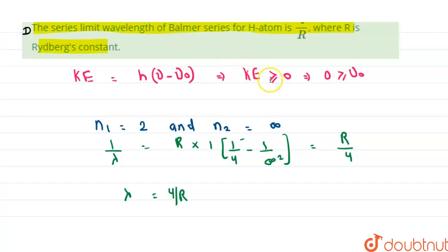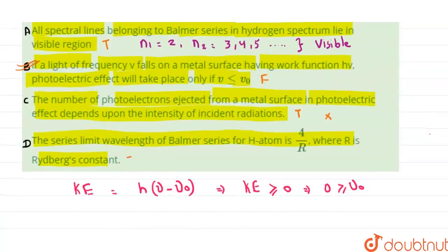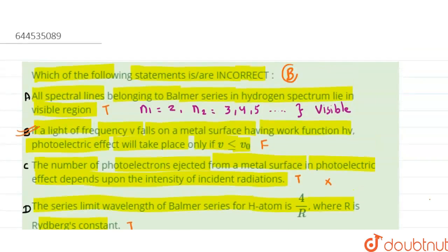limit wavelength for the Balmer series of the hydrogen atom. So statement D is true and is not the required answer. The correct answer for this question is B. I hope I made myself clear. Thanks for watching, have a nice day.